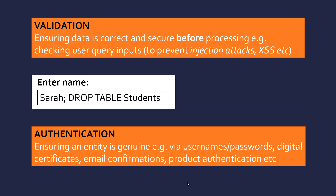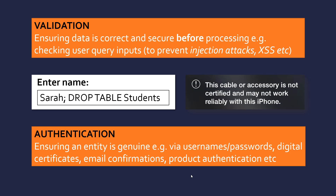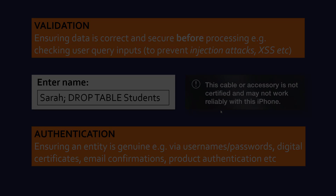The second key term is authentication — ensuring an entity is who they say they are. Examples include username and password, email confirmations, and digital certificates issued to websites and servers to prove they are genuine. There's also product authentication — for instance, plugging a non-certified cable into an iPhone may trigger a warning, as mechanisms exist to ensure hardware is secure and designed to work with the device.